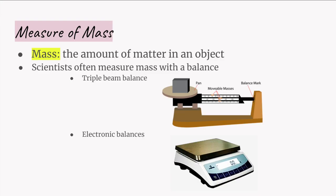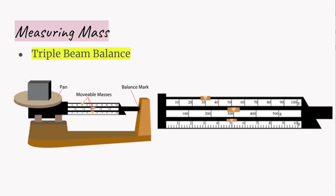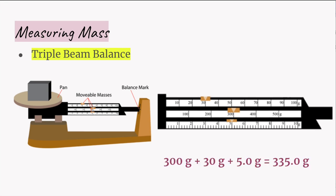Mass is the amount of matter present in an object. Scientists often measure mass with a triple beam balance or an electronic balance. In the enlarged figure of the triple beam balance scales: the middle scale reads 300 grams, the top scale reads 30 grams, and the bottom scale reads 5.0 grams. Therefore, the mass of the object in the pan is 335.0 grams, found by adding 300 plus 30 plus 5.